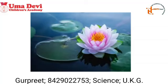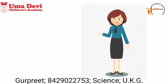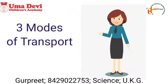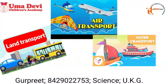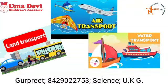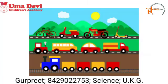Now let's do the division. So kids, there are three modes of transport: land transport, air transport, and water transport. Today we will revise the land transport. Land transport are those in which vehicles can move from one place to another on land. Now let's see the examples.